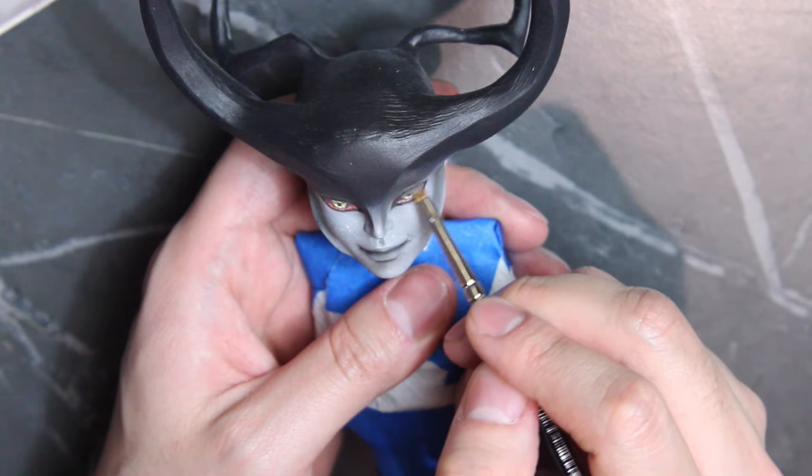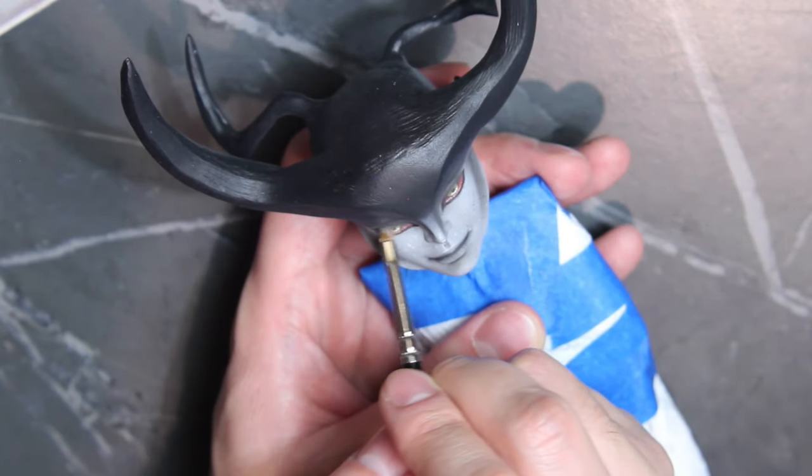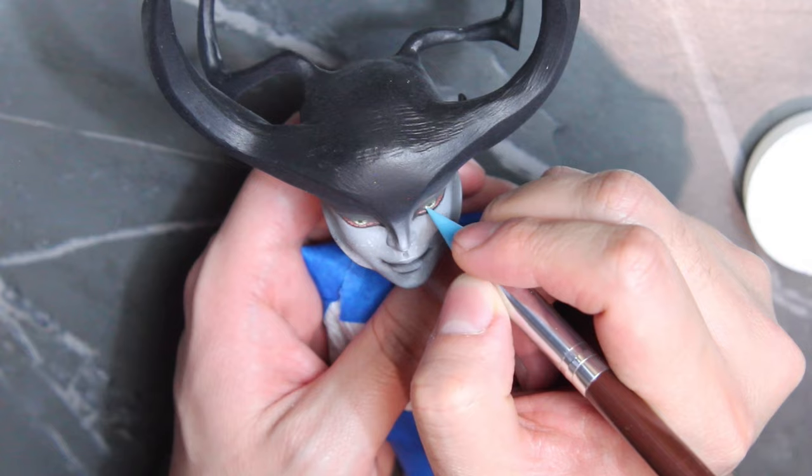And draw some lines on the irises to add some texture. Then apply black on the upper lash line to close the eye a little bit. And finally, the catch lights.